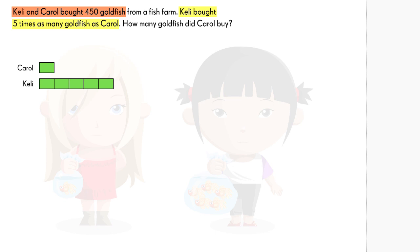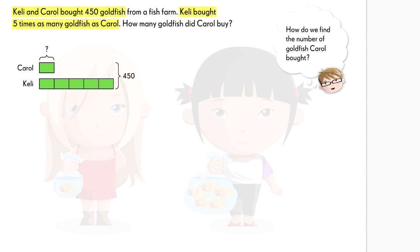Kelly and Carol bought 450 goldfish in total. We need to find the number of goldfish Carol bought. To find this, we divide by six.